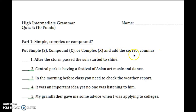And then it asks you to add the correct commas. So there's a lot of things to keep in mind at the same time. Remember that a simple sentence is one independent clause. A compound sentence is two independent clauses joined by FANBOYS — so usually: and, or, but, so, and yet.